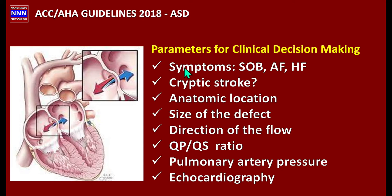The decision depends on symptoms: shortness of breath, cardiac arrhythmia with rapid ventricular response like atrial fibrillation, pulmonary hypertension, heart failure, or whether the patient presented with a cryptogenic stroke — a blood clot traveling from the right side of the heart through to the left and then to the brain. Next, we need to determine the anatomic location of the defect.